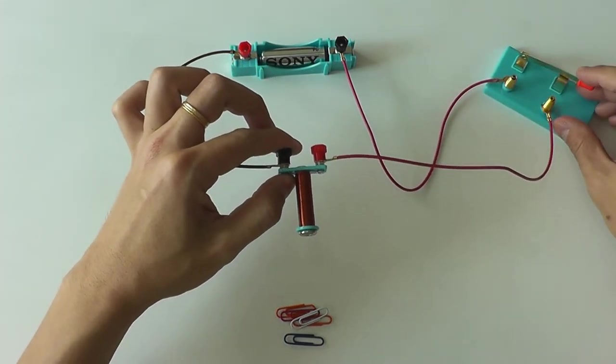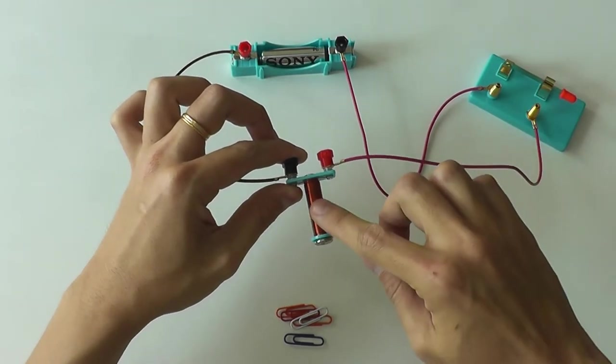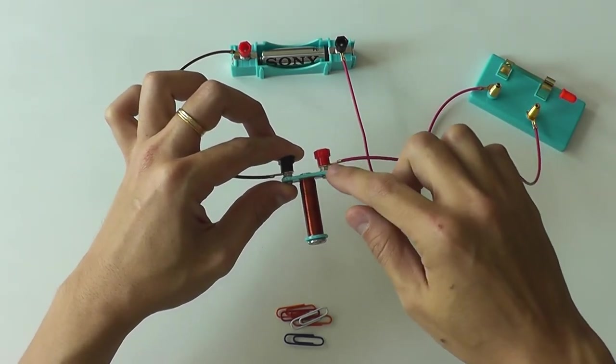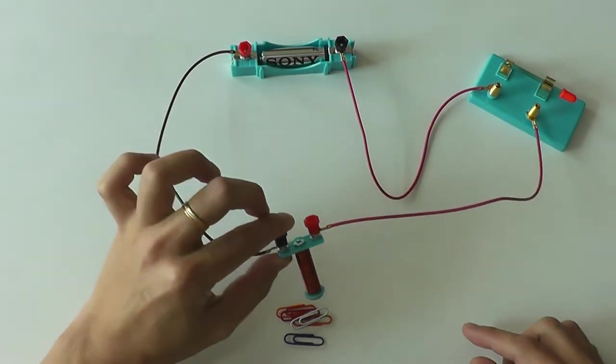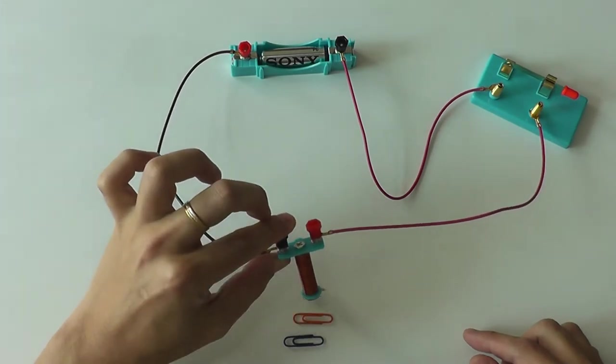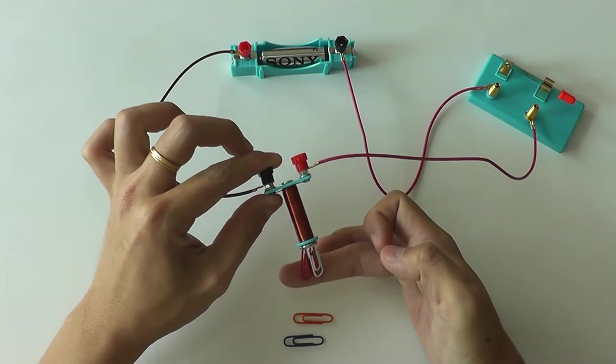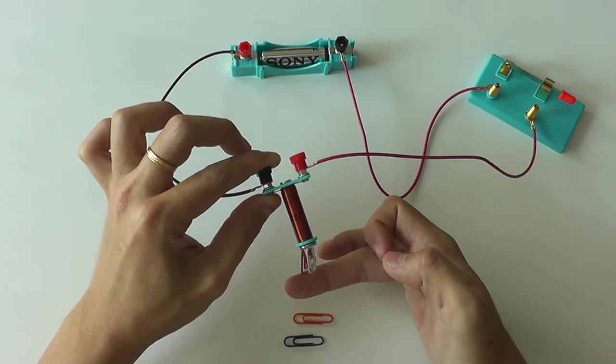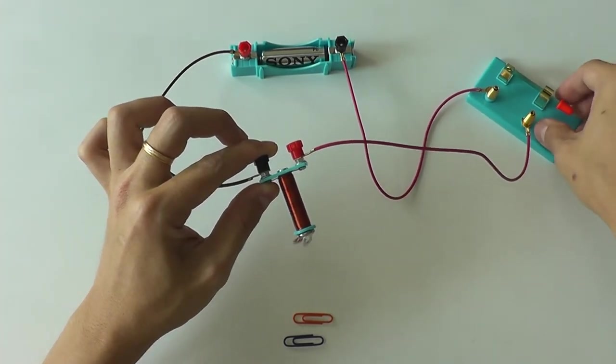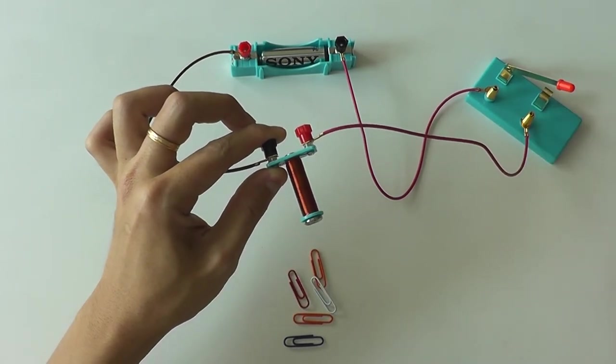And you turn on the switch. Now electricity is passing through this electromagnet and it is magnetized. Can you see? It is picking up the paper clips and if I open the switch, all will drop.